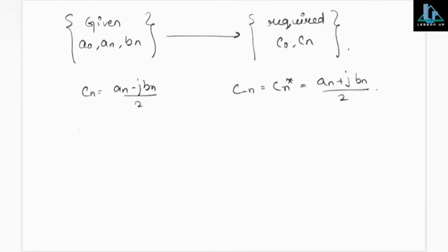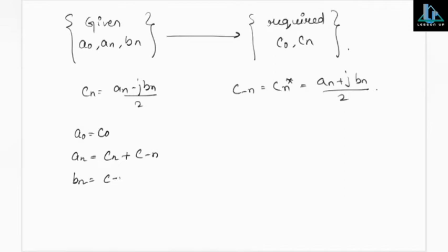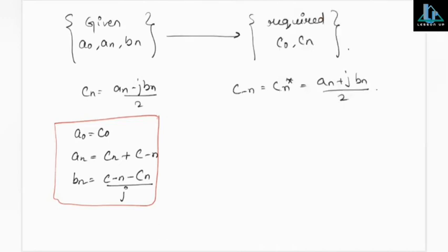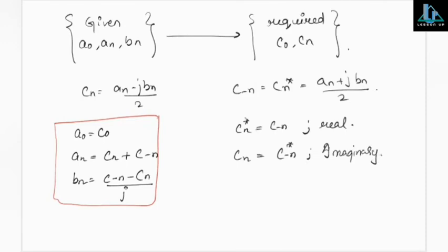If you want to convert from exponential Fourier series to trigonometric Fourier series: a₀ = c₀, aₙ = cₙ + c₋ₙ, and bₙ = (c₋ₙ - cₙ)/j. So if you have exponential Fourier coefficients, you can find the trigonometric Fourier coefficients. And if cₙ* = c₋ₙ, this will give real coefficients; if cₙ = c₋ₙ*, then the coefficients will be imaginary.